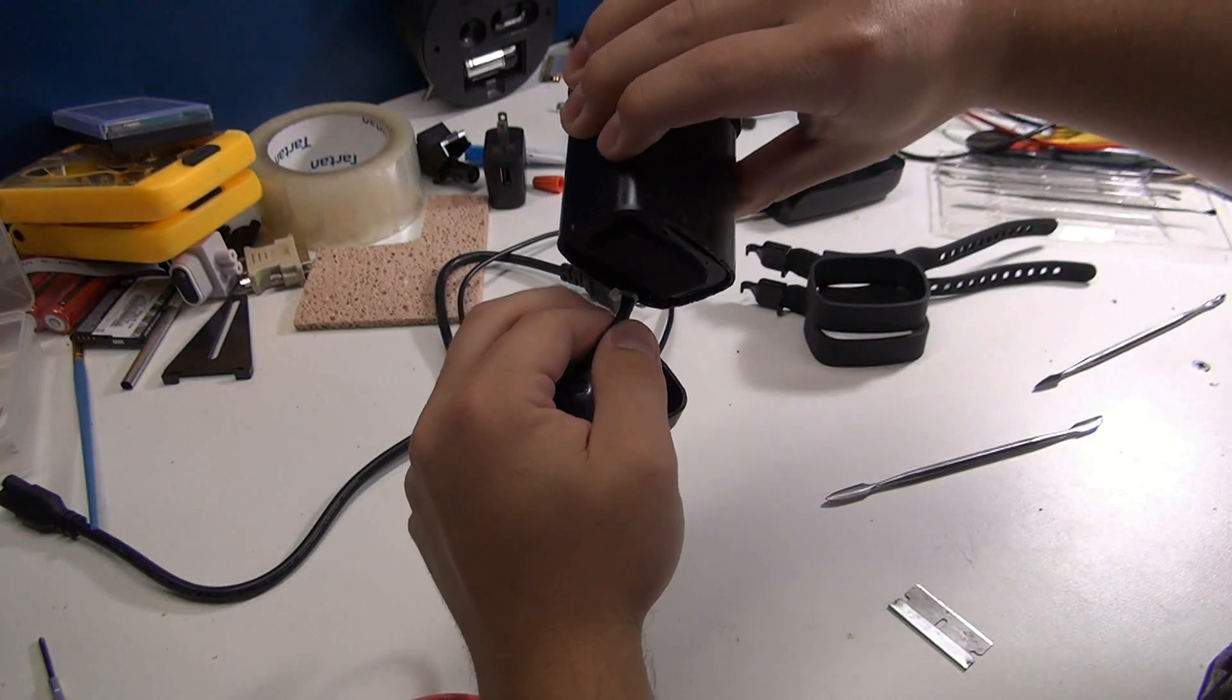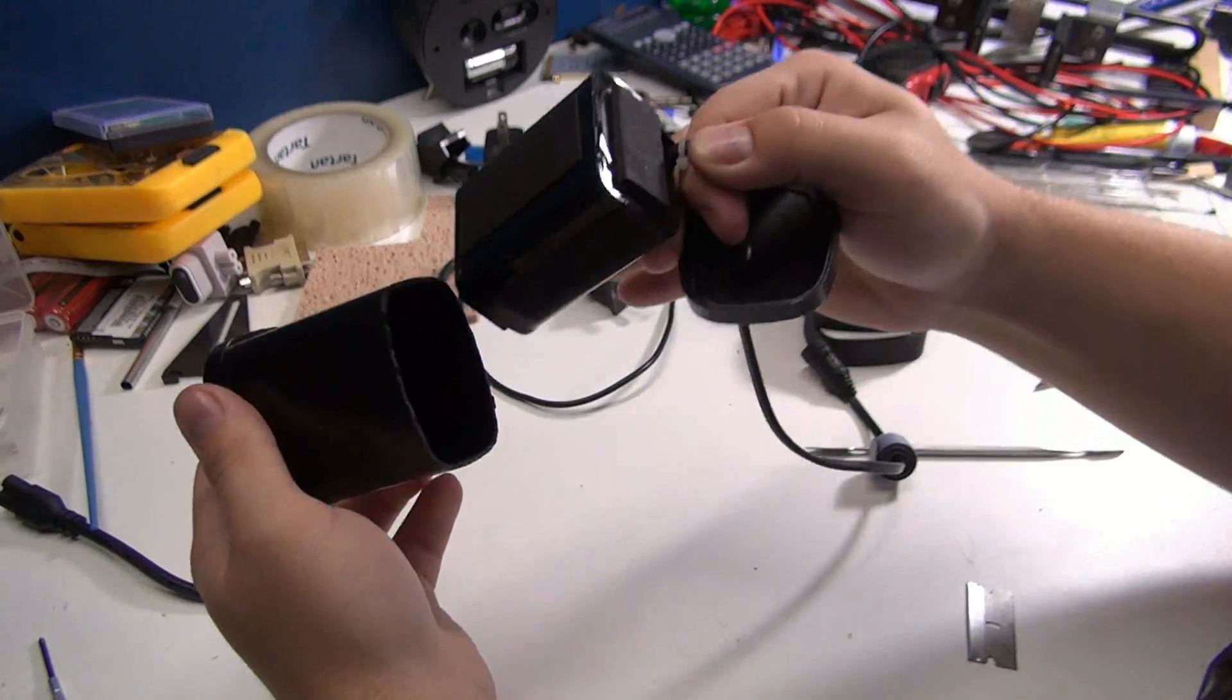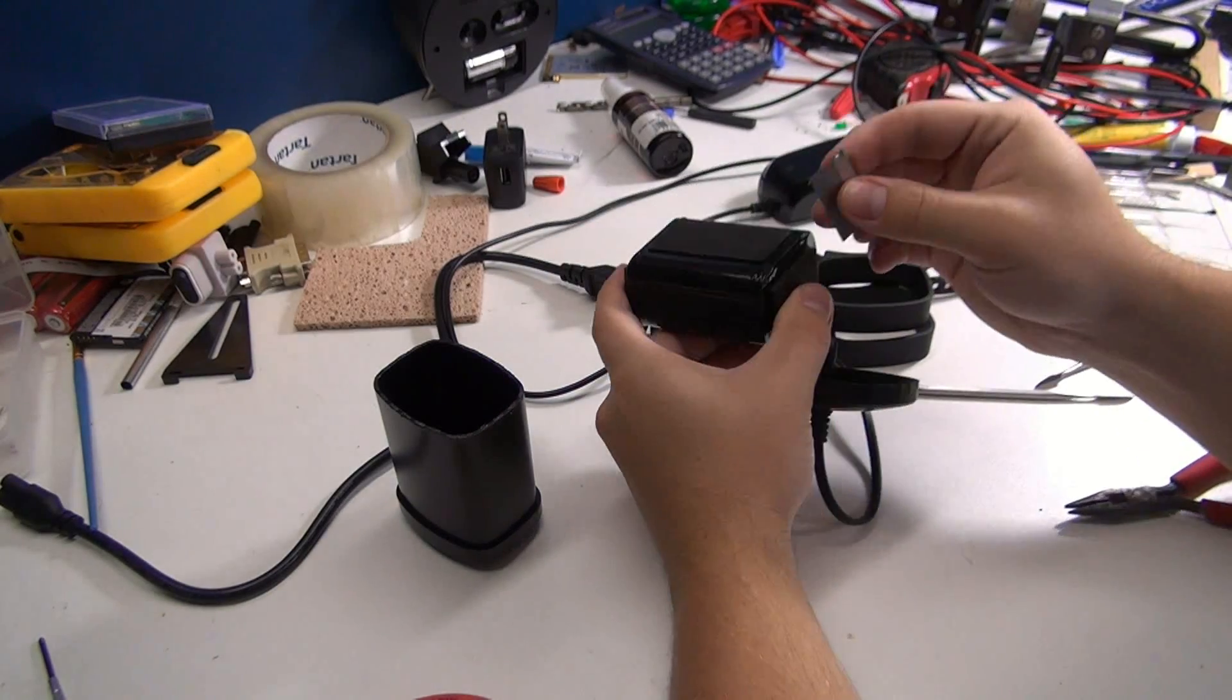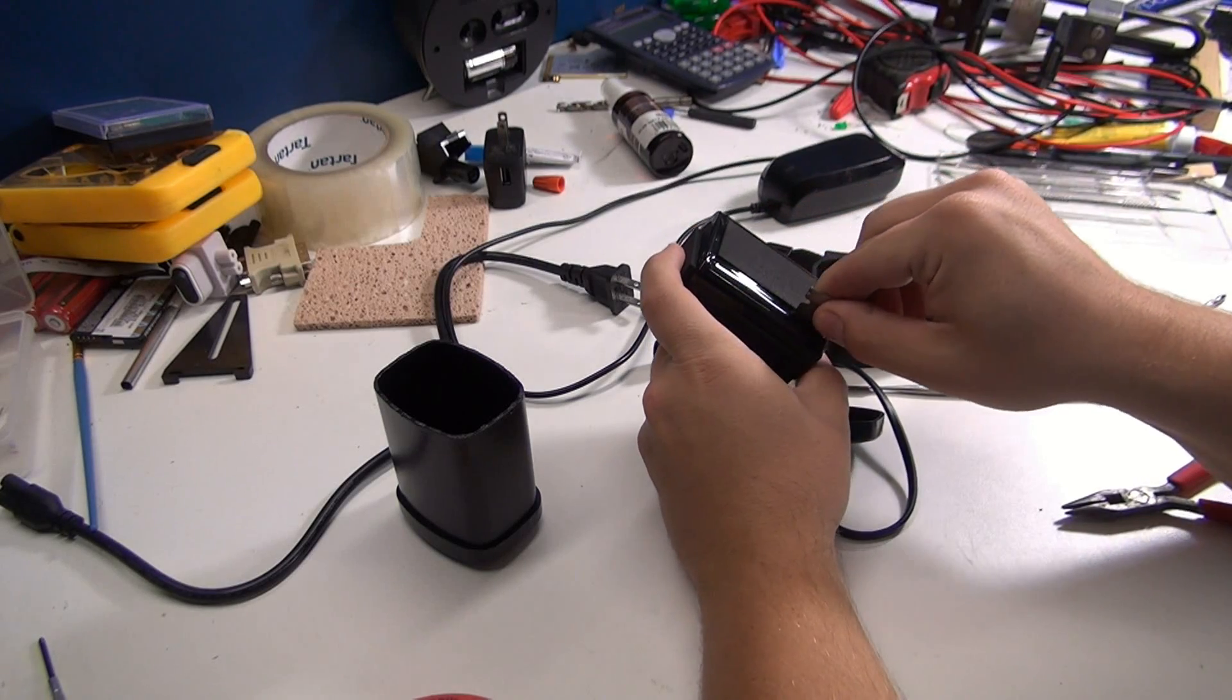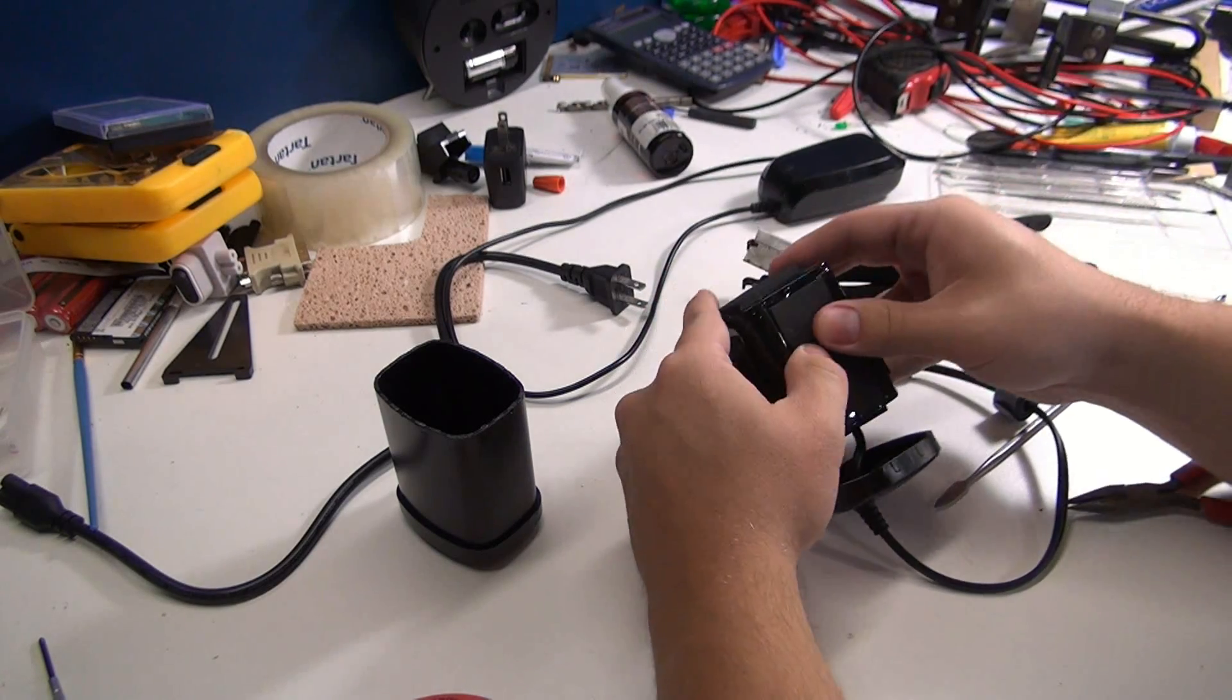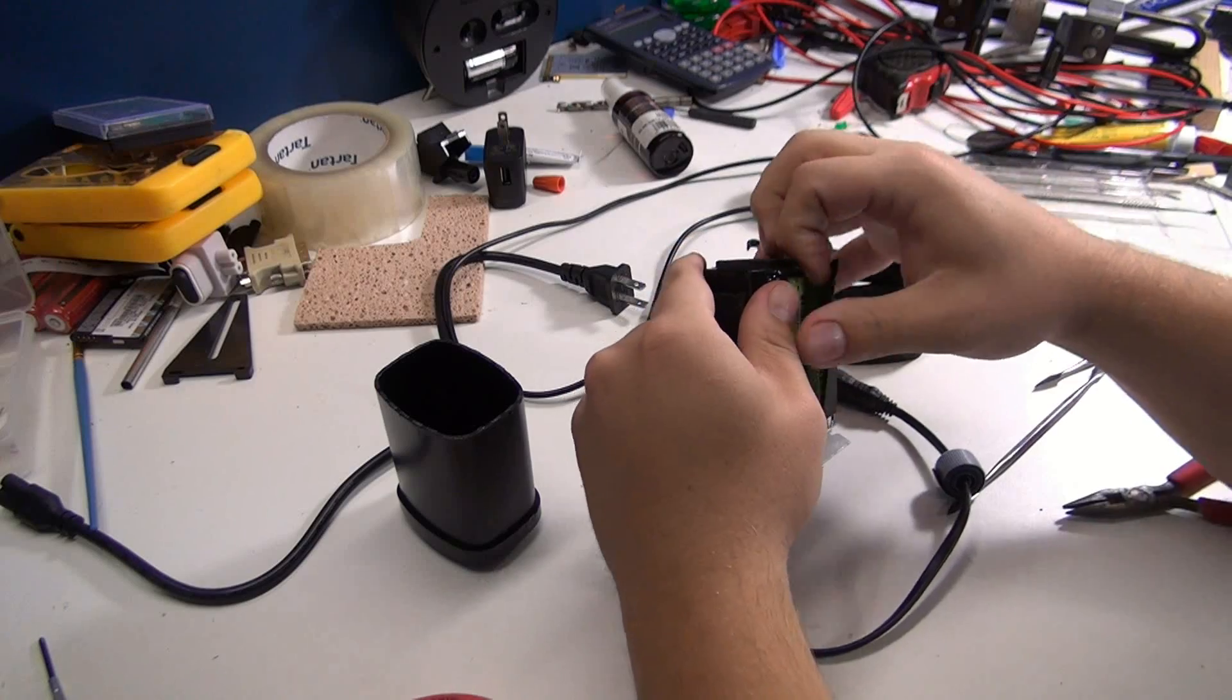So the battery pack just pulls out of there. We can go ahead and cut that up. So now I just cut that, should be able to pull off.